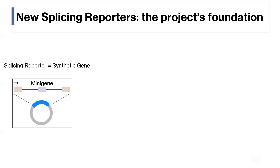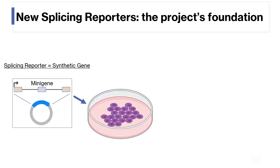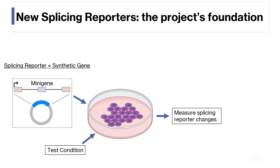The new piece of technology we developed that really enabled the rest of the project are these new splicing reporters. A splicing reporter is a synthetic gene that contains a mini-gene — the simplest possible representation of an alternative splicing event. We introduce it into cells, then perturb the cells under the test condition, and measure changes in the splicing of the reporter to provide an indication of how the test condition influences splicing.